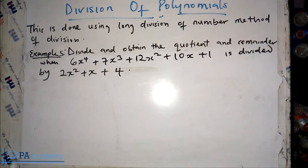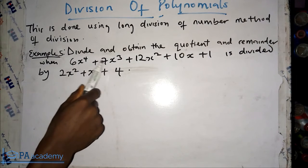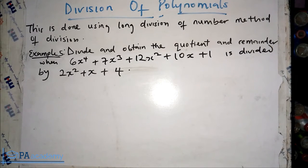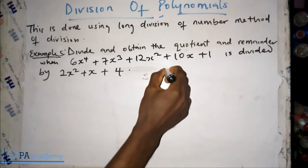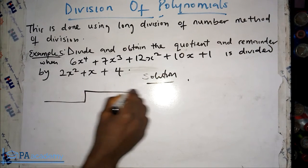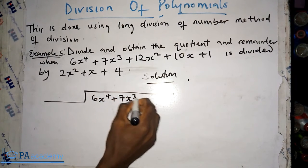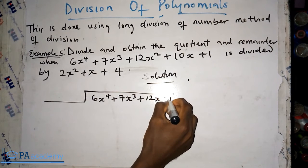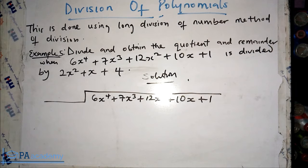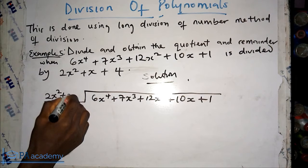Welcome to Example 5. Divide and obtain the quotient and remainder when 6x⁴ plus 7x³ plus 12x² plus 10x plus 1 is divided by 2x² plus x plus 4. This is a long one but still simple. Let's draw the long division table with the dividend inside and 2x² plus x plus 4 on the outside.